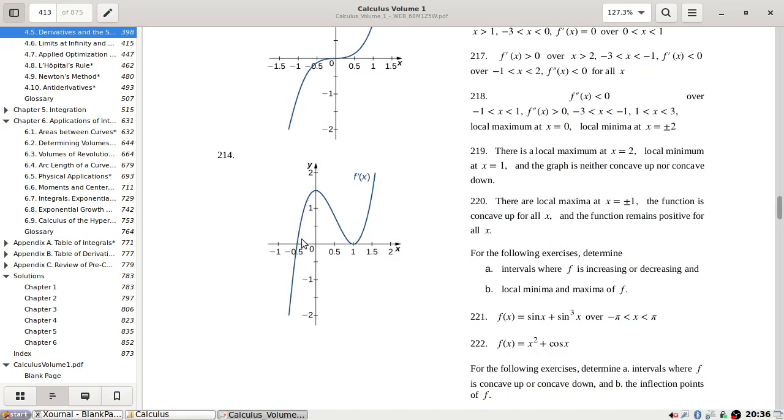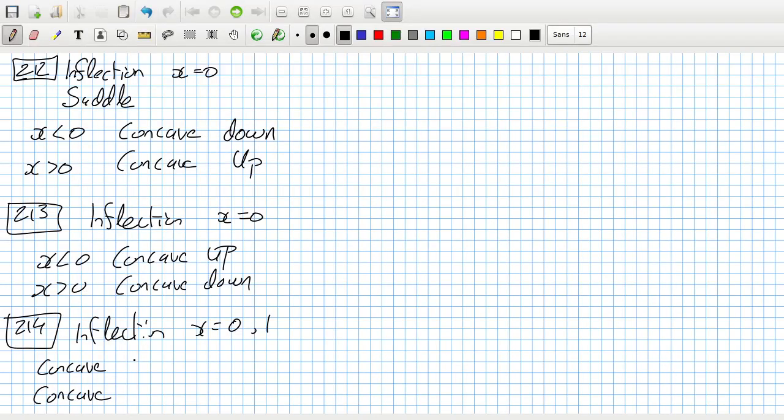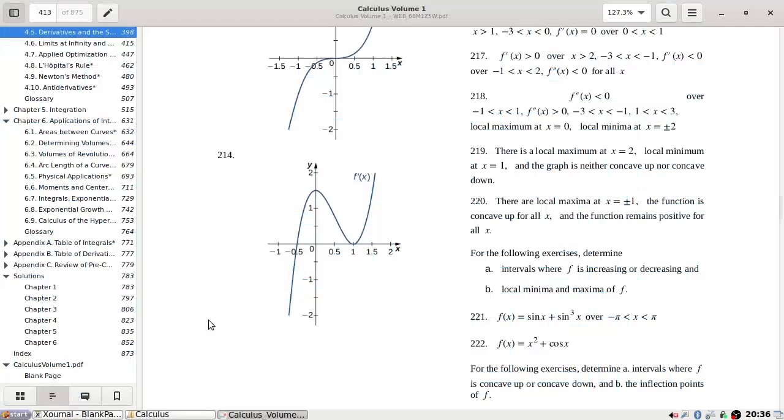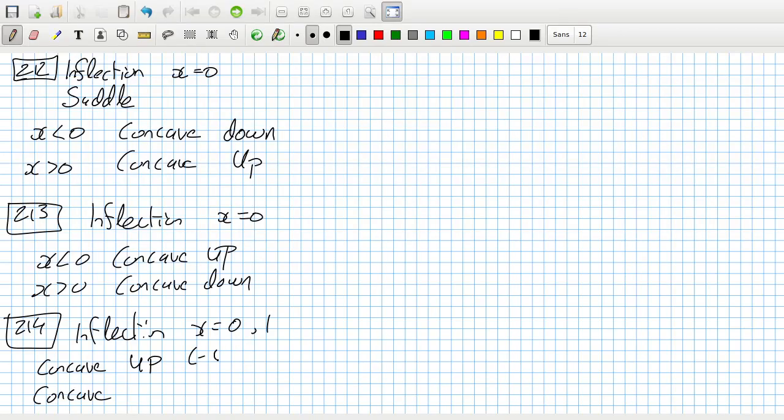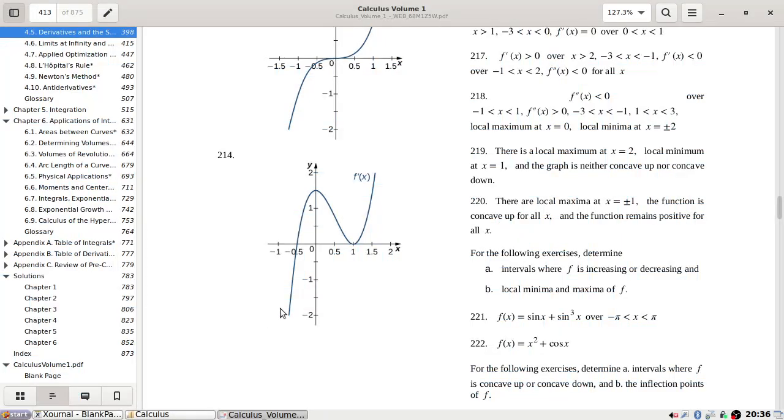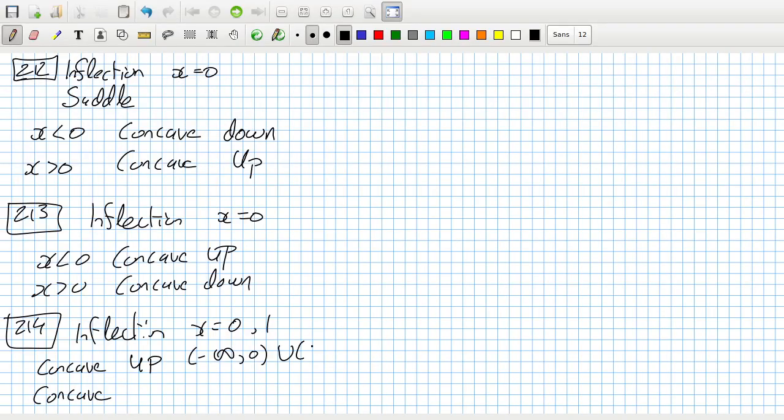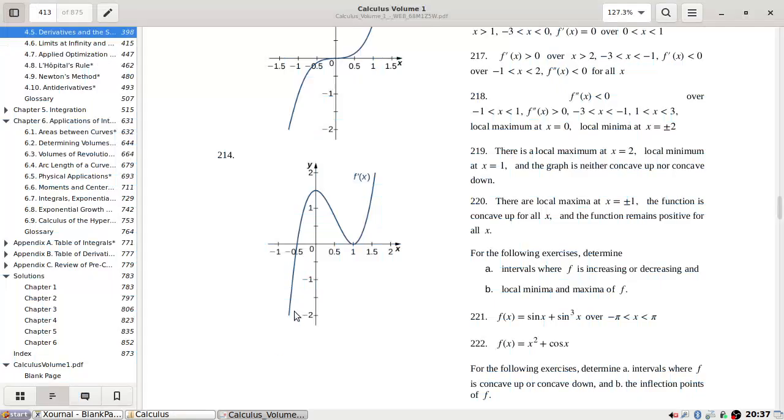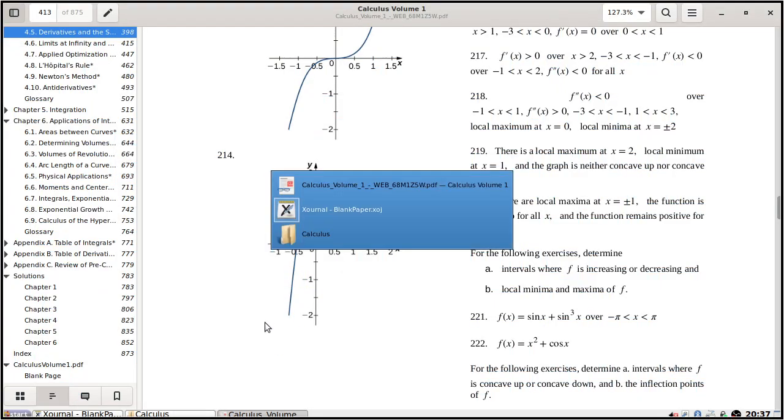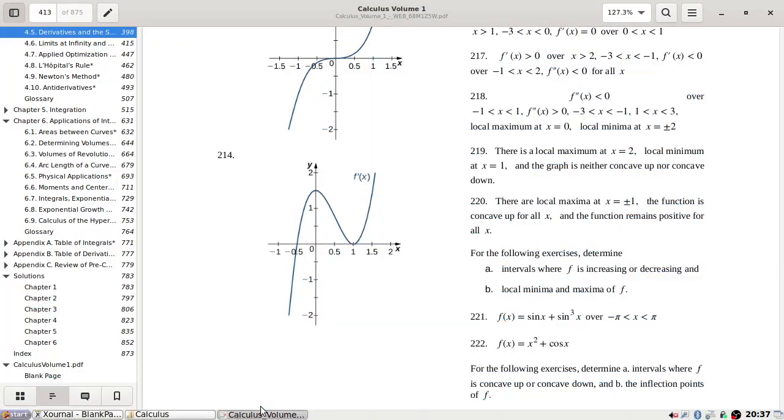positive makes it a minimum concave up from minus infinity to 0 and 1 to infinity and then down 0 to 1. Okay.